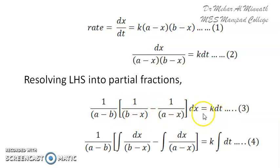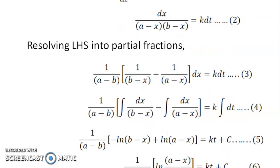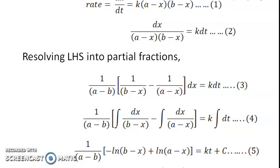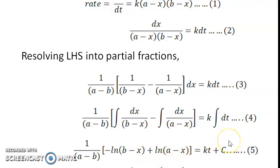Integrating equation 3, we arrive at equation 5: [1/(a − b)] × [−ln(b − x) + ln(a − x)] = Kt + C, where C is the constant of integration. Simplifying by combining the logarithmic terms gives equation 6: [1/(a − b)] × ln[(a − x)/(b − x)] = Kt + C.